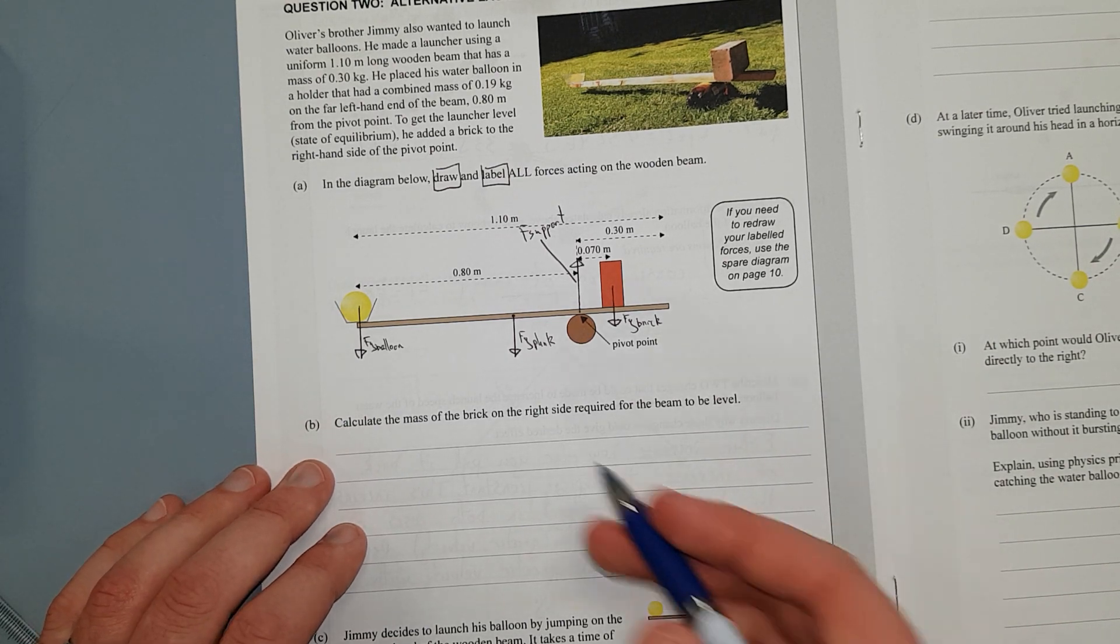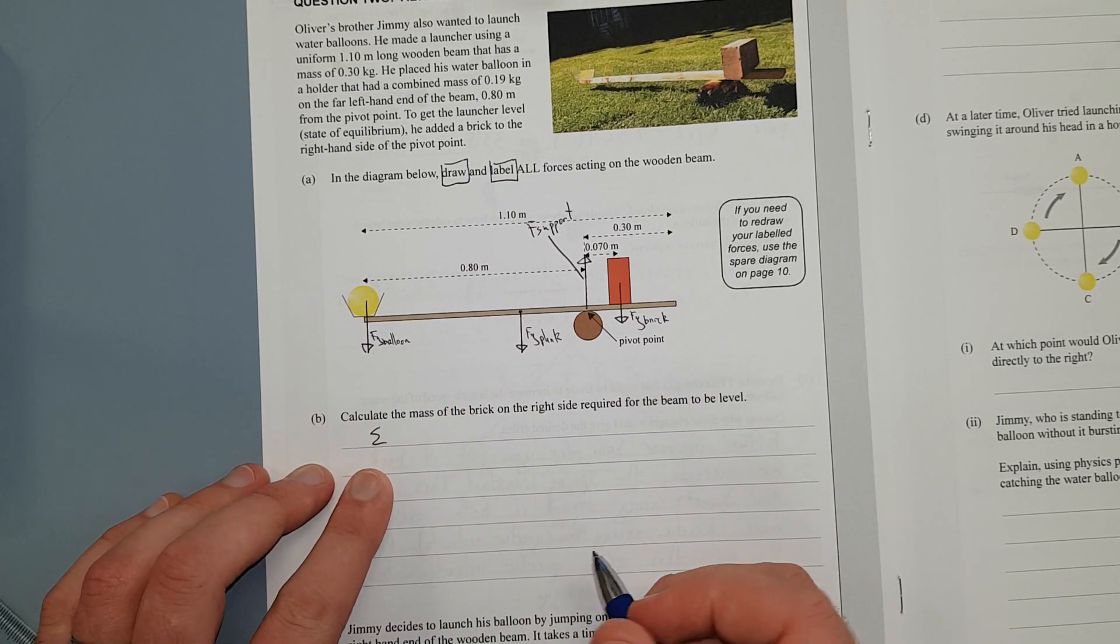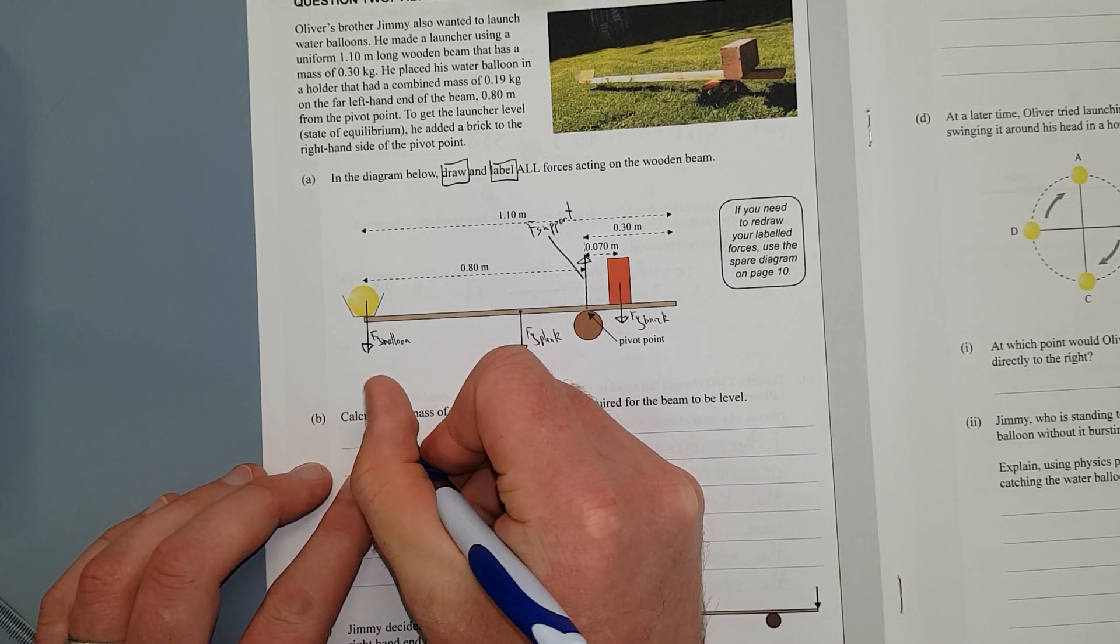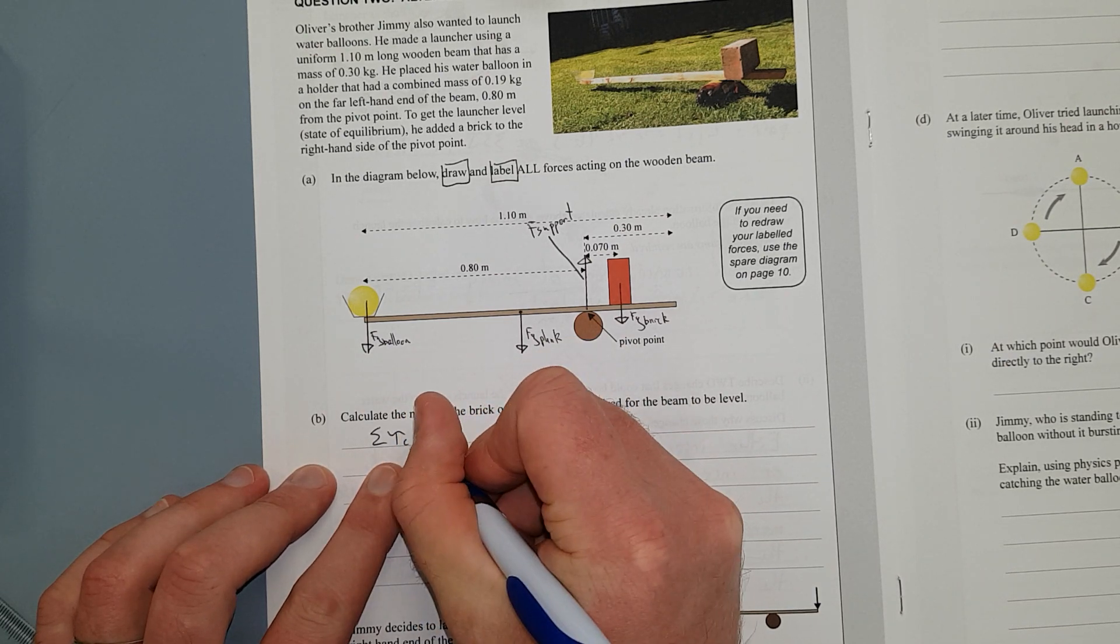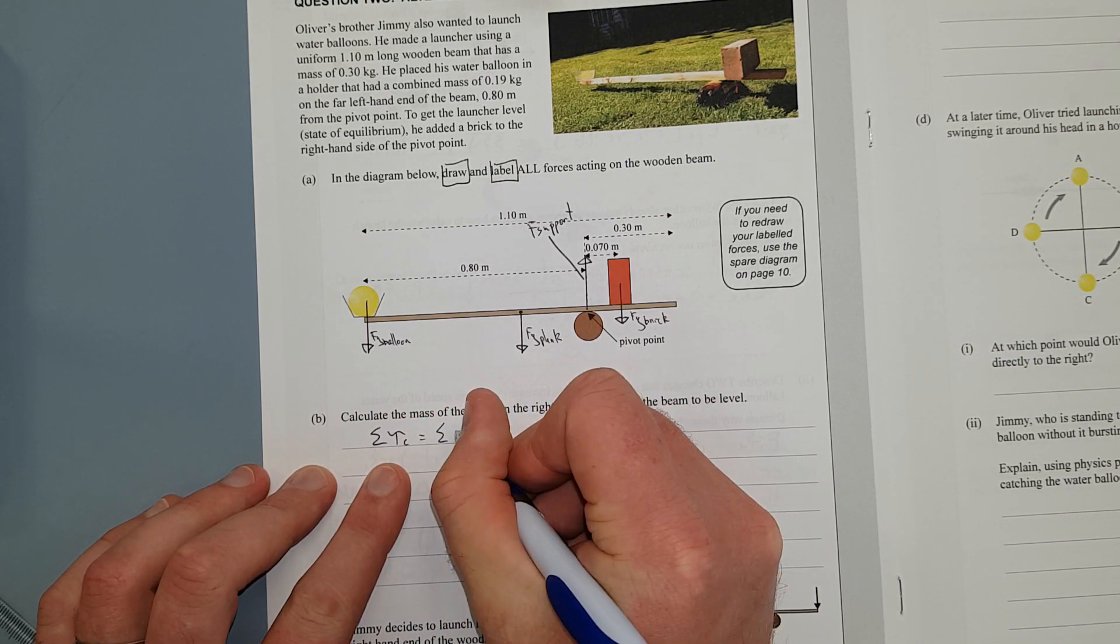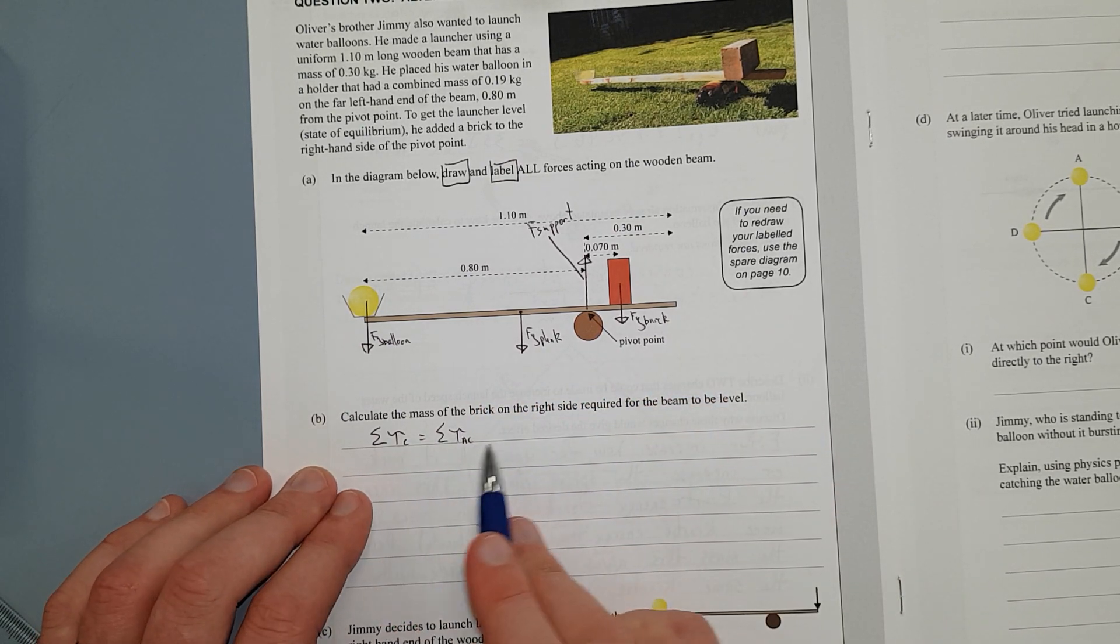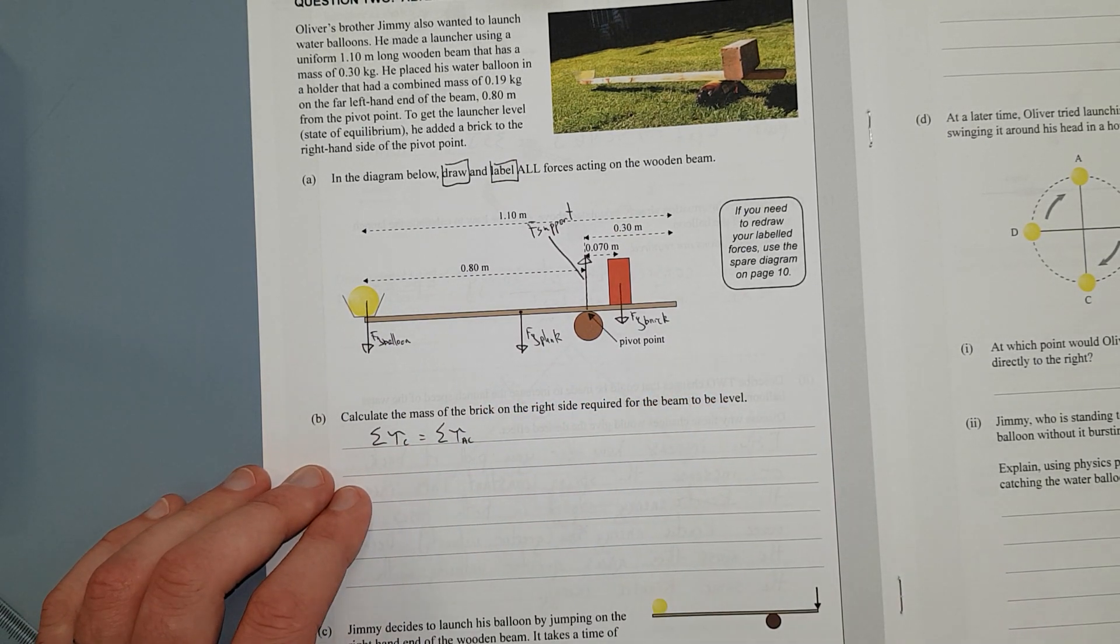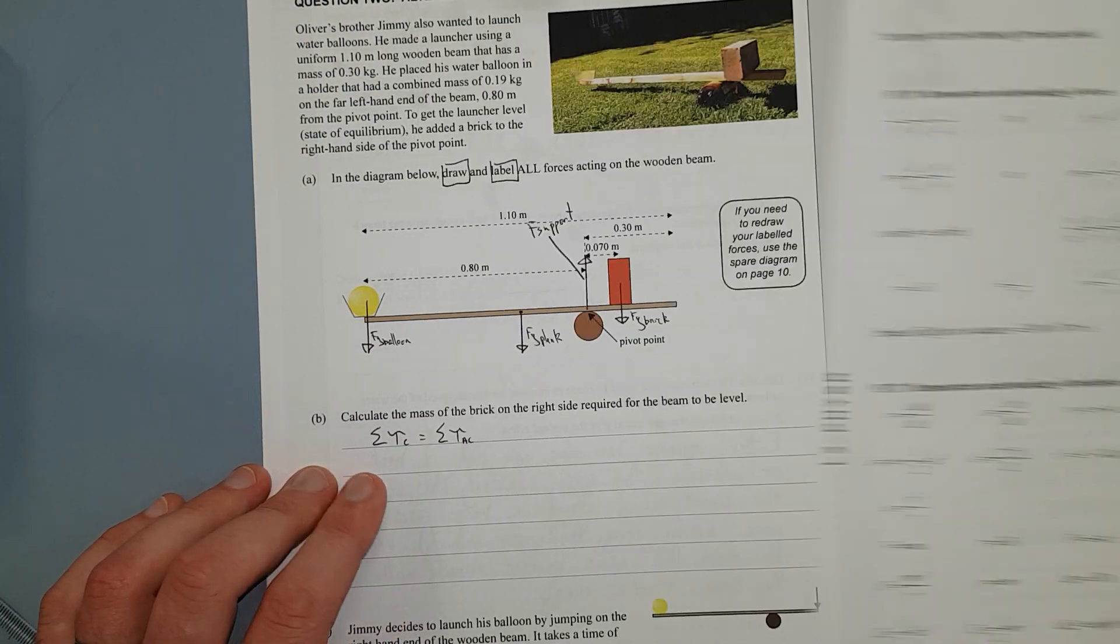Calculate the mass of the brick on the right-hand side required for the beam to be level. So, this is a balanced torque equation. You need to write the sum—this is a Greek letter sigma, if you can't read my hideous writing—of the torques, that's just the squiggly T for torque.